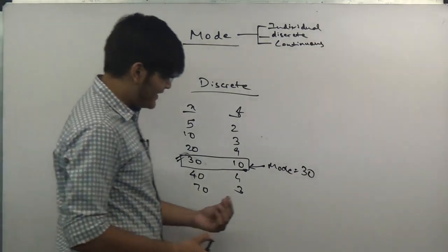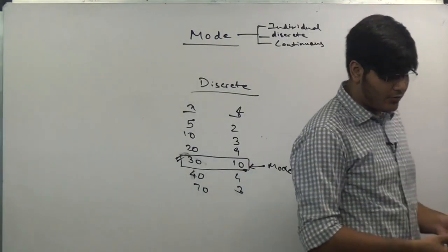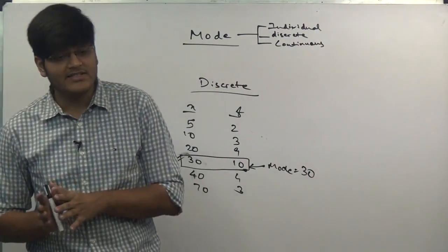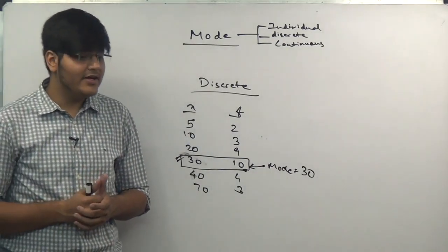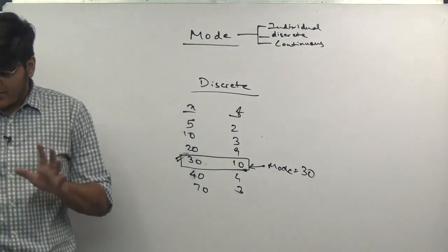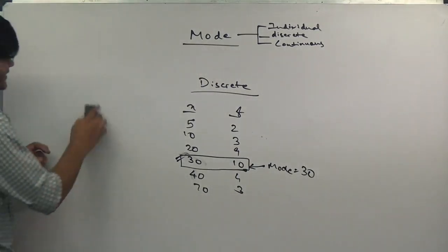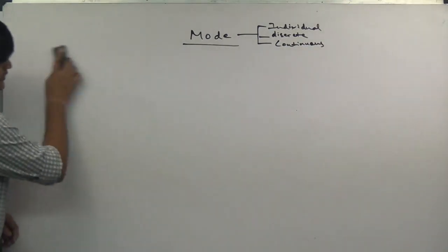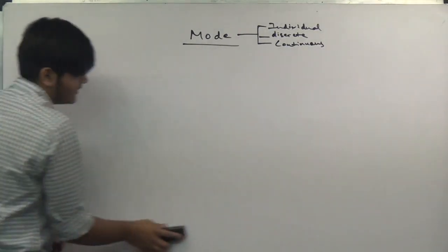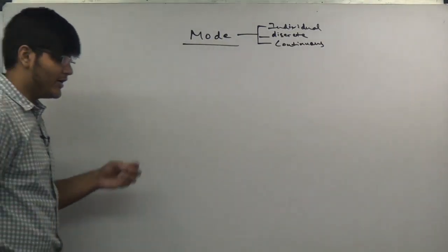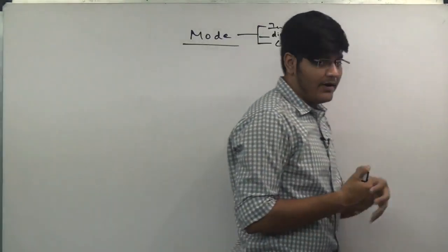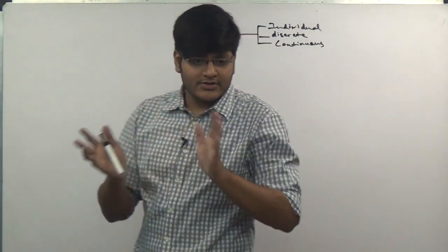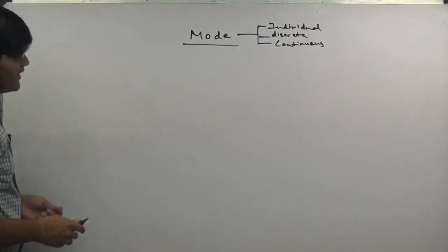These two series are very easy. The only problem you will face is in the continuous series because the formula is completely different from what we have done in median or mean. Discrete series also has one more method, a manual method, but it is a very long process, very tiring.